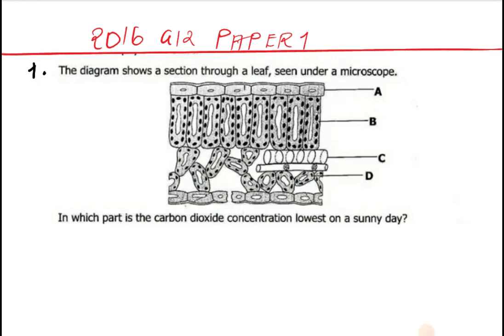I have two questions from Biology 2016 G2 Paper 1. These are questions eight and nine, but I've labeled them as question one and question two. Question one says: the diagram shows a section through a leaf seen under a microscope. In which part is the carbon dioxide concentration lowest on a sunny day?